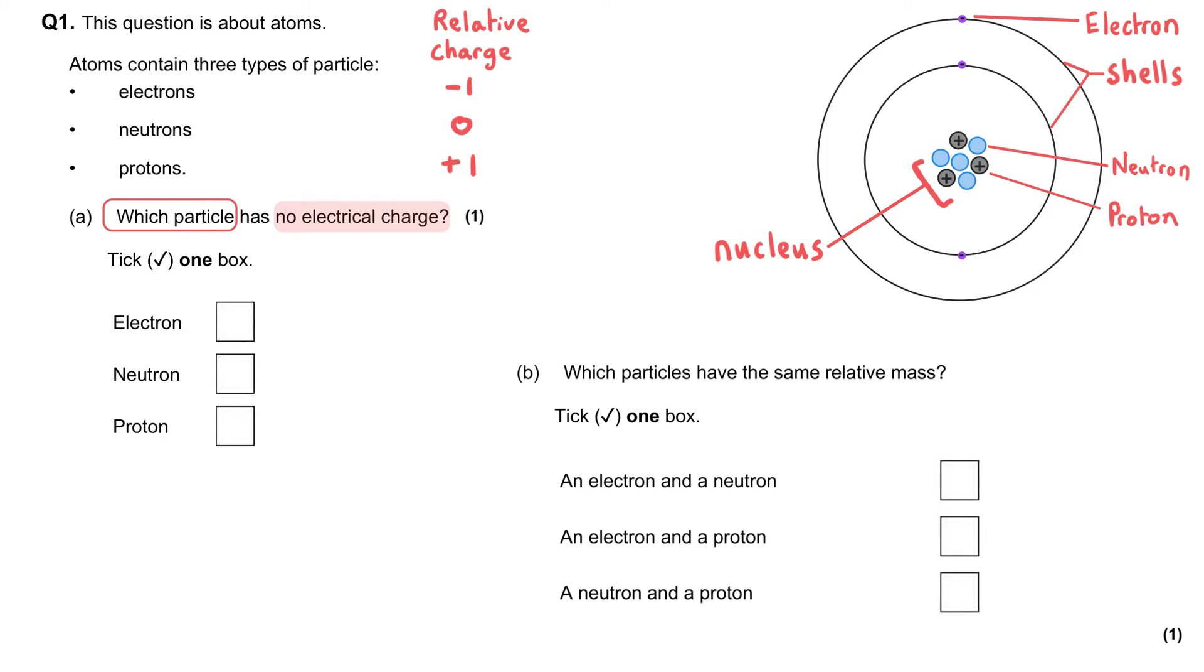Electrons are negatively charged, or we might write minus one. And neutrons are neutral, they have no charge. That might be a helpful way for you to remember the fact that the neutron is neutral. And so neutron is the correct answer here.